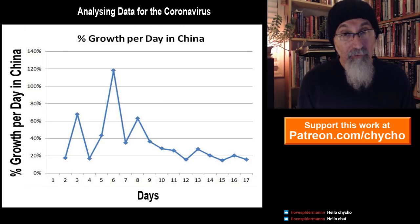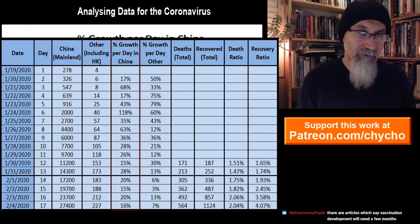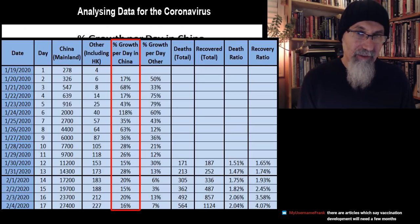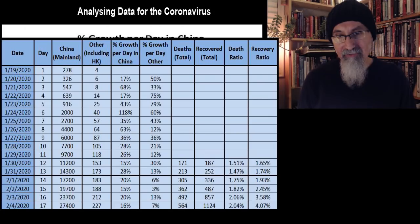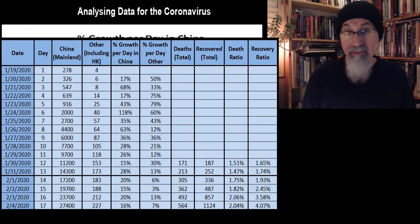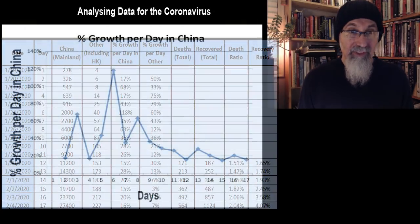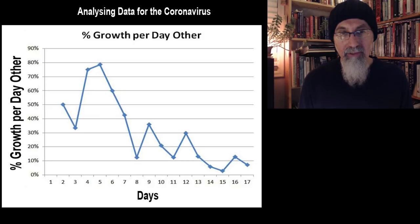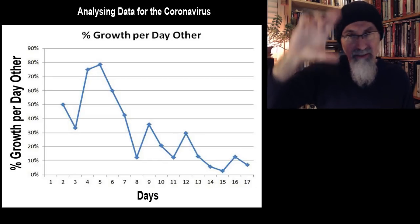This is the rate of growth per day in China. Looking at the table, in the fifth column, towards the end we're seeing the rate of growth per day stabilizing around 20%, between 15 to 20 percent. I want to keep an eye on that to see if it comes down. Vaccination development will need a few months — vaccination is supposed to take a long time unless someone already has one. So this is the rate of growth per day in China.